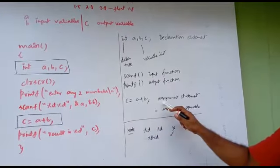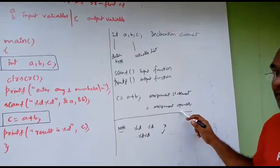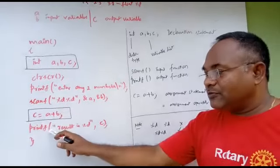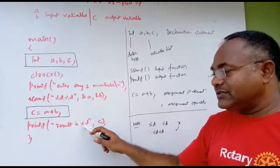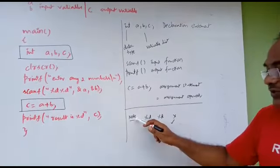You call this an assignment statement, and the symbol is called an assignment operator. And after that, you are supposed to print the output, and printf result is %d and C.